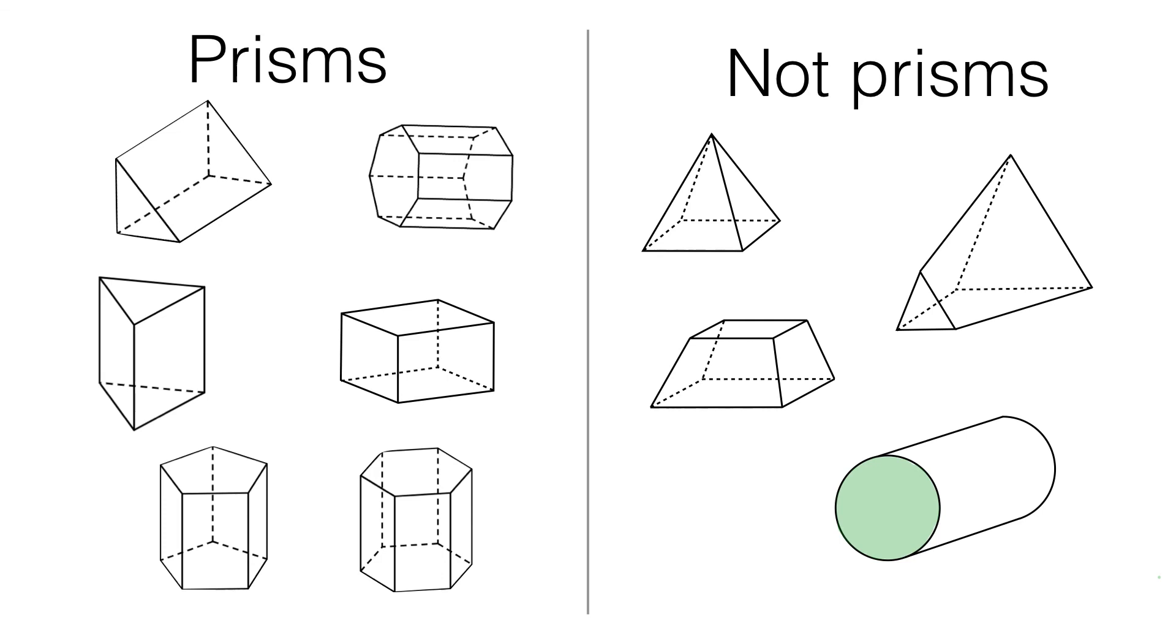So it is fair to say a cylinder has one of the most important properties of a prism, but the definition of a prism is that the base must be a polygon, a straight-sided shape. And because a circle is not a straight-sided shape, a cylinder is not a prism, but it is a lot like a prism.